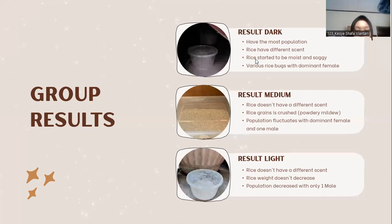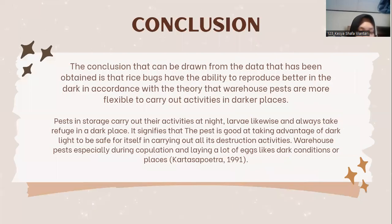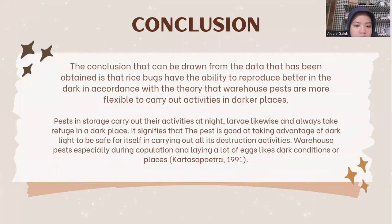For the light condition results, the rice doesn't have a different skin, rice weight has been decreased, and the population decreased with only one male. The dark treatment has the most population because rice blocks have the ability to reproduce better in the dark, in accordance with the theory that warehouse pests are more flexible to carry out activities in darker places. The rice had a different scent and started to be moist and soggy.